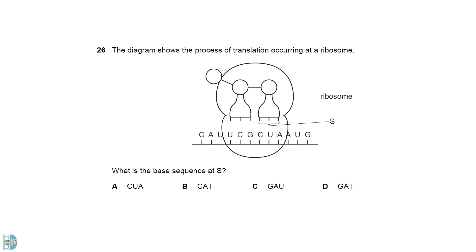The anticodon of tRNA is complementary to the codon on mRNA. If the codon is CUA, the anticodon is GAU.